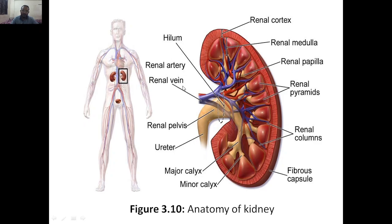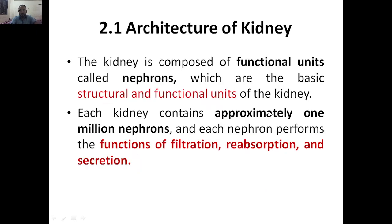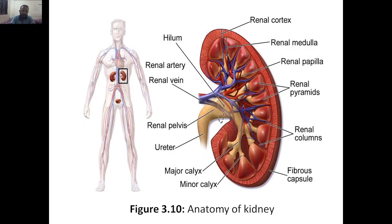We also have the renal artery and renal vein. The combination of the renal pelvis area is called the hilum. The kidneys are located at the back side of the body, and they are connected to your urinary system as well, because the waste produced must go to the outside — so it works as an excretion system.